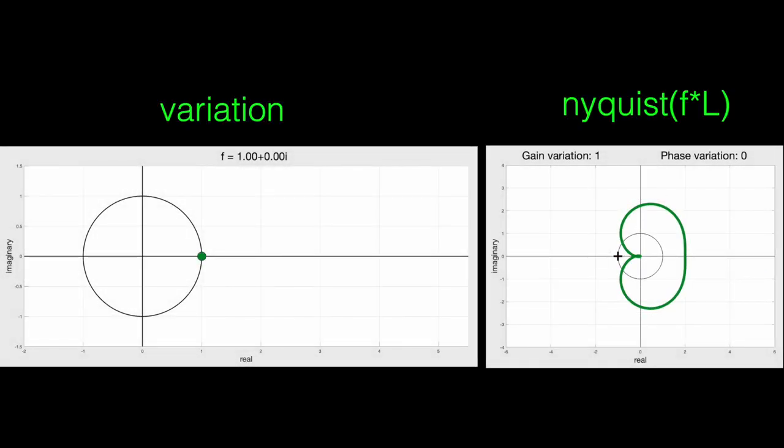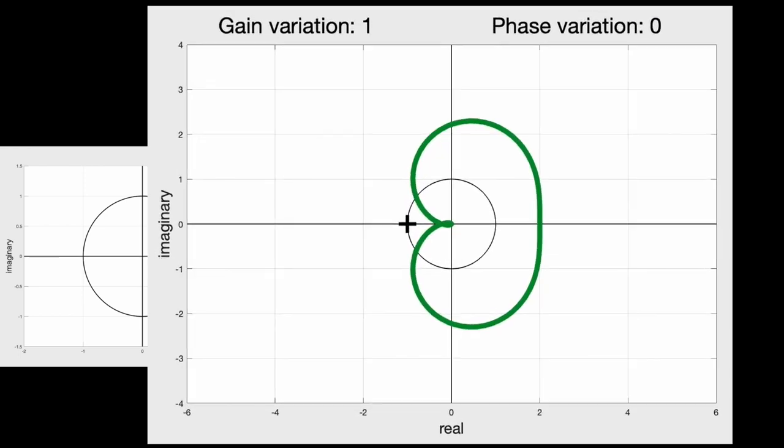All right. On the screen, there's two graphs. The one on the left is plotting just the multiplier f in the complex plane, and you can see that it's currently at f equals 1. And the plot on the right shows the Nyquist plot for f times L. But since f equals 1, this is just the response for the unmodified system. Now, I'm not going to go through the Nyquist stability criterion in this video, but if you're interested, I've linked to one of my videos below that describes it in detail. And if you're not familiar with it, then I think it's enough to know that for this particular open loop system L, the closed loop system will be unstable if the Nyquist curve encircles the point minus 1.